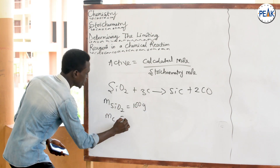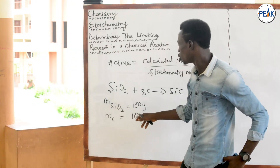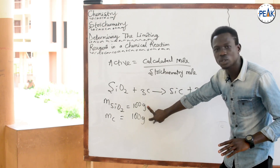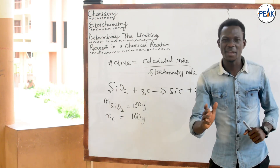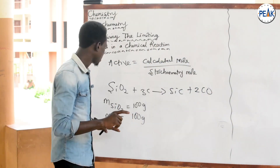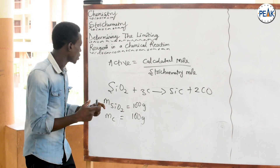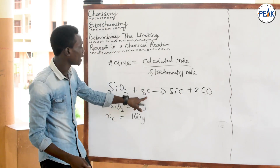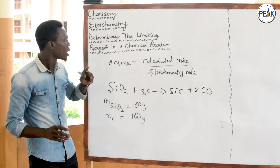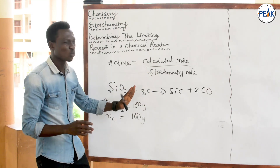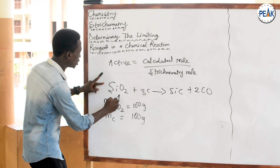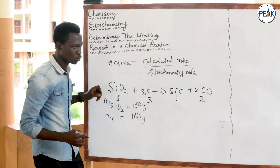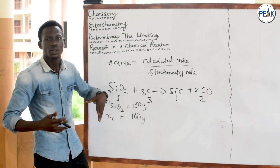The mass of SiO₂ given is 100 grams and the mass of carbon given is also 100 grams. The fact that both are 100 grams does not mean they are just enough to produce the desired product. First, let's confirm the equation is balanced: 1 Si, 2 O, 3 C on each side — yes, it is balanced. The stoichiometric moles from the balanced equation are: SiO₂ = 1, C = 3, SiC = 1, CO = 2.